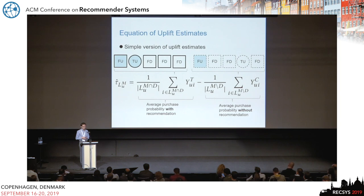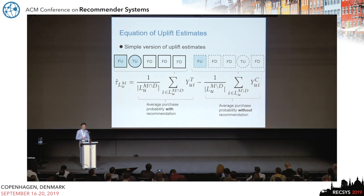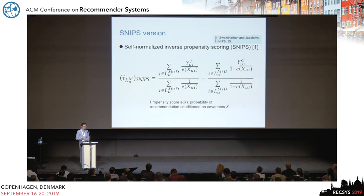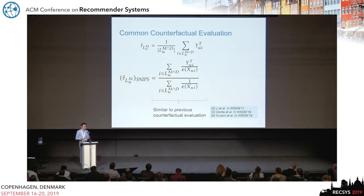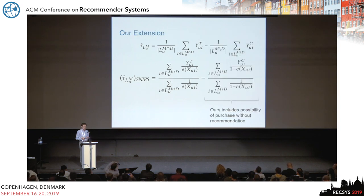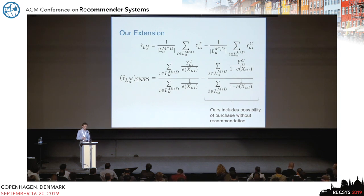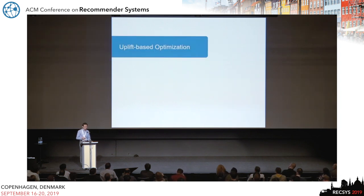This procedure is formally expressed as a simple version of the uplift estimator. Essentially, what we are doing is taking the difference between average purchase probability with and without recommendation. We also derive an IPS version of this estimator. This formulation includes the possibility of purchase even without recommendation, extending previous counterfactual evaluation approaches.